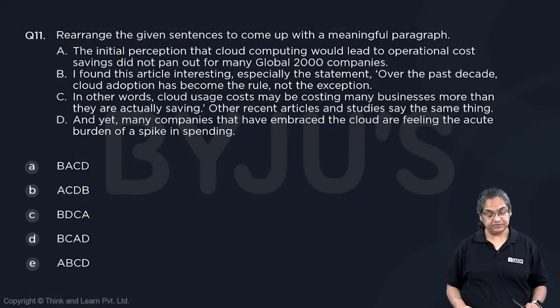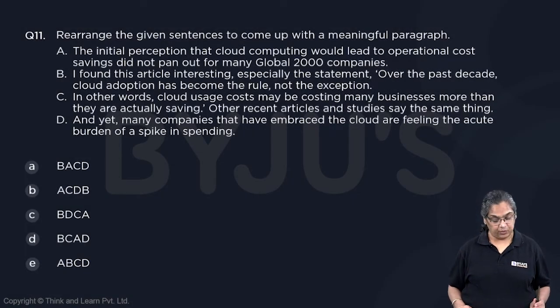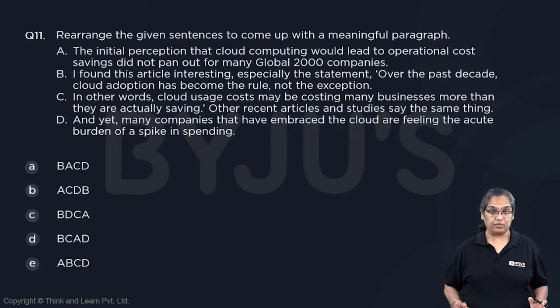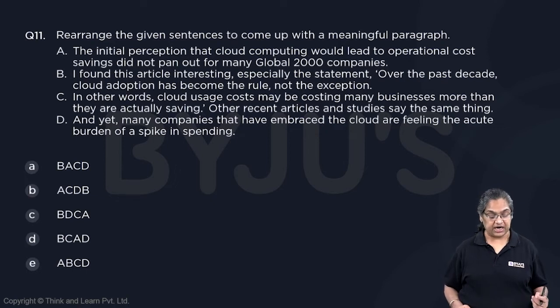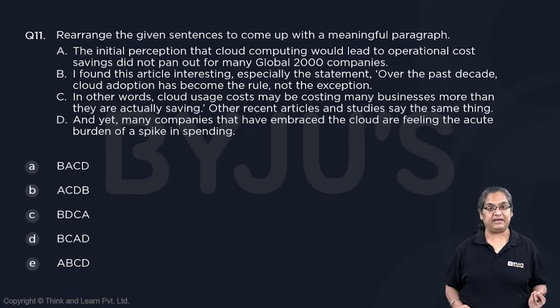This is a 4-sentence para jumble. Let's quickly read the jumbled-up sequence. In the given options, 2 start with A and 3 start with B.